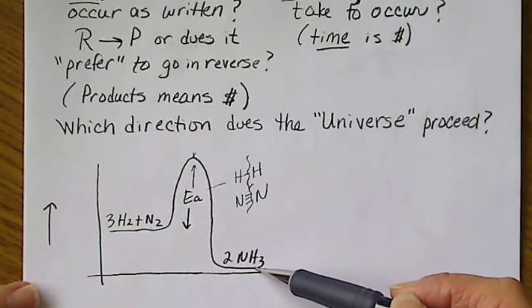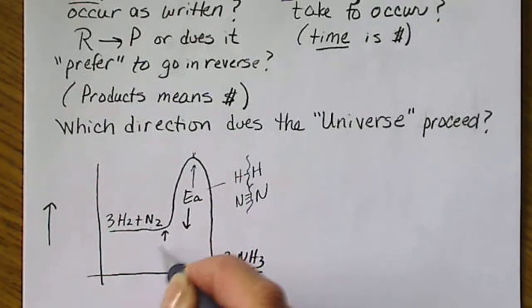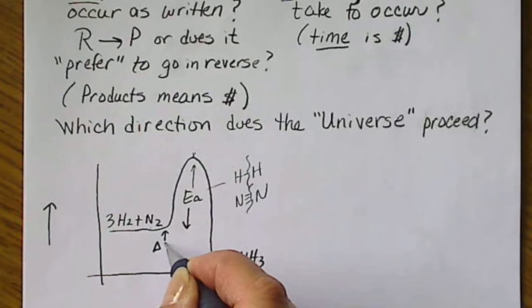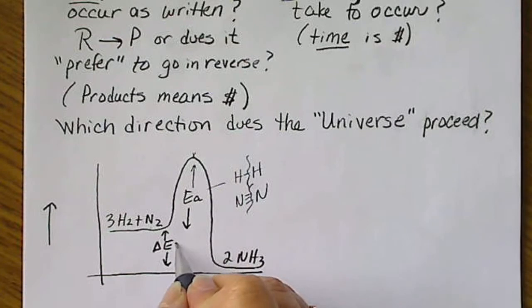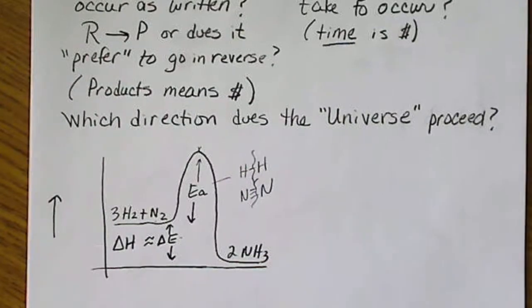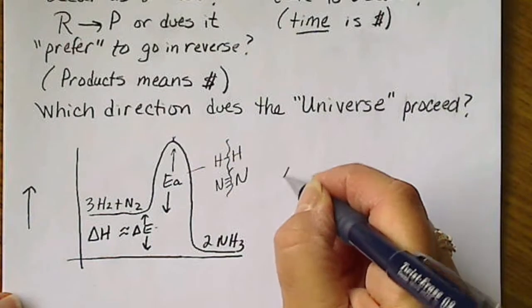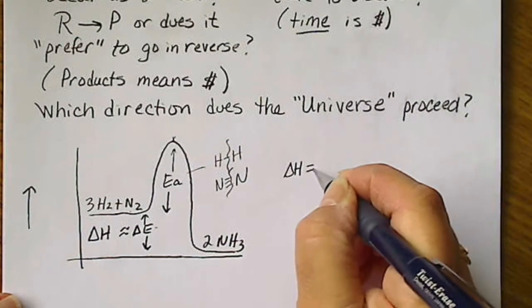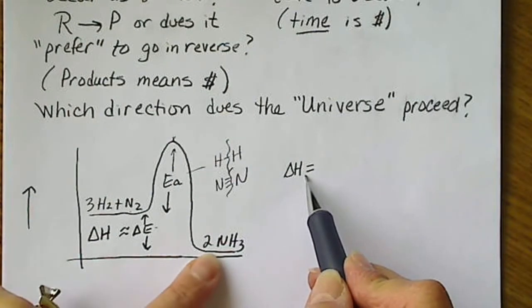So the difference here is what we refer to as delta E. And most of the time in chemistry, this is very closely approximated by delta H. So if you remember that, delta H, we can look that up in the back of the book in the appendix.